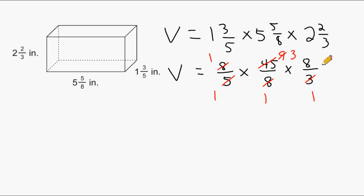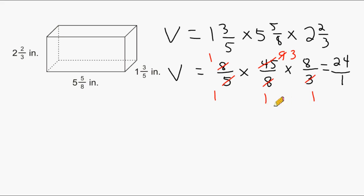What we have left for our numerator is a one, a three, and an eight. One times three is three, and three times eight is twenty-four. And if you ever have all ones remaining at the bottom, we can write a one at the bottom right away, because you can multiply one by itself any number of times and you're still going to get one. So we have an answer of twenty-four over one, which is the same thing as twenty-four. So the volume of the shown rectangular prism is twenty-four cubic inches.